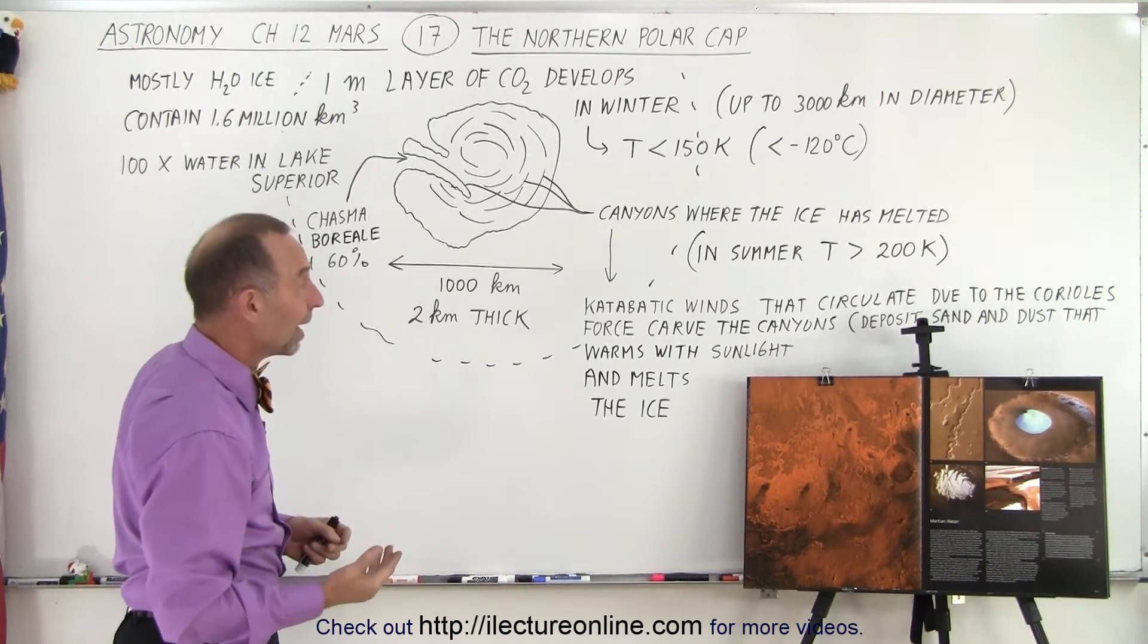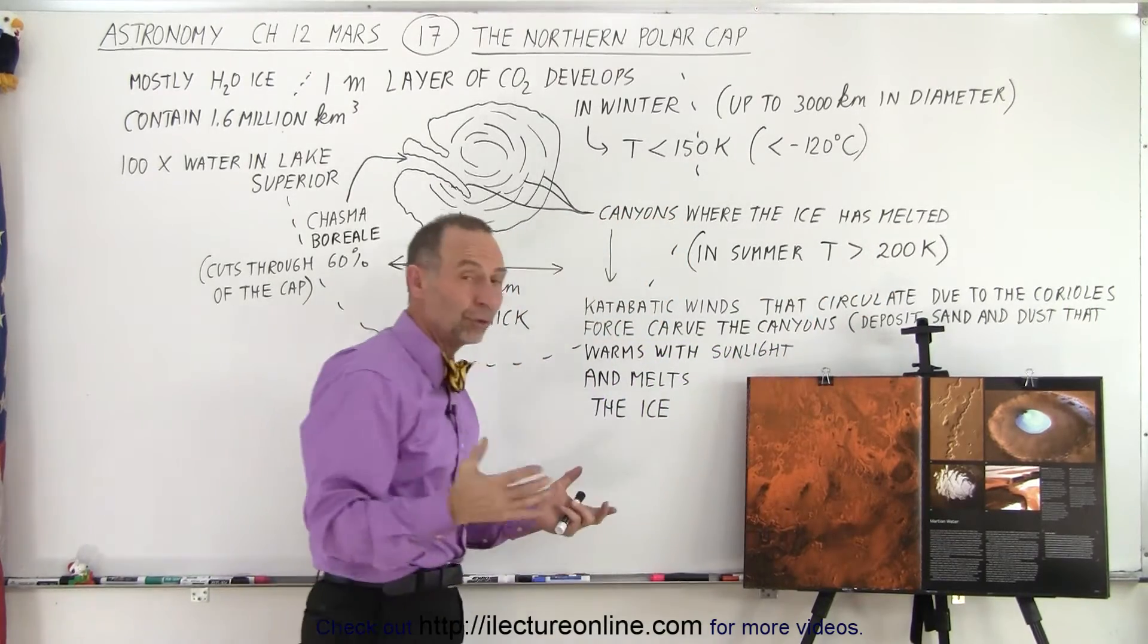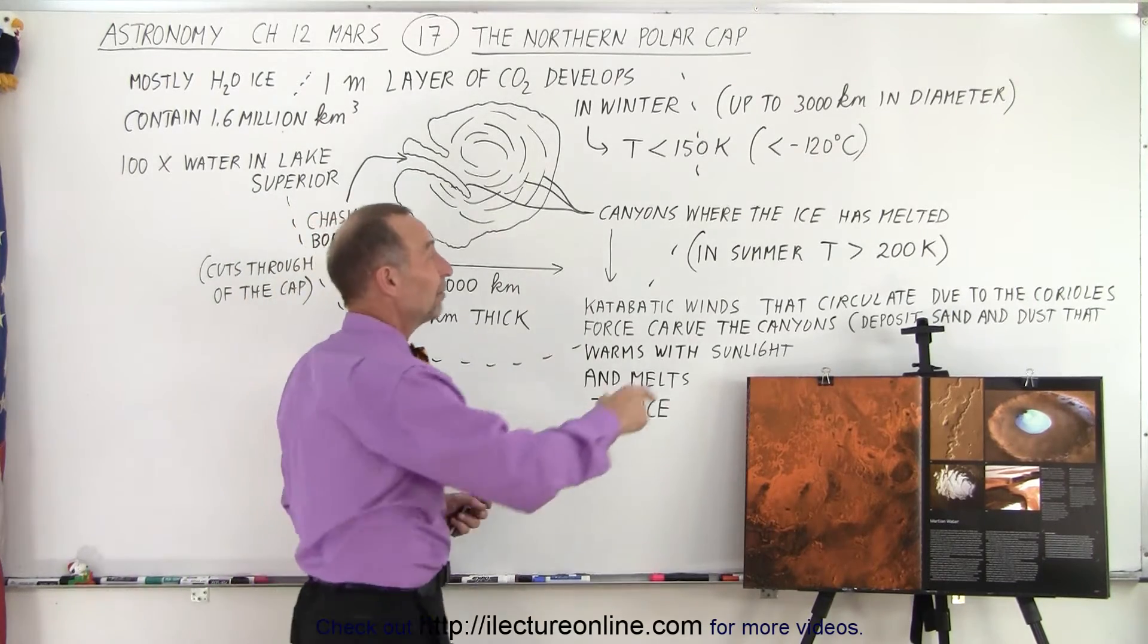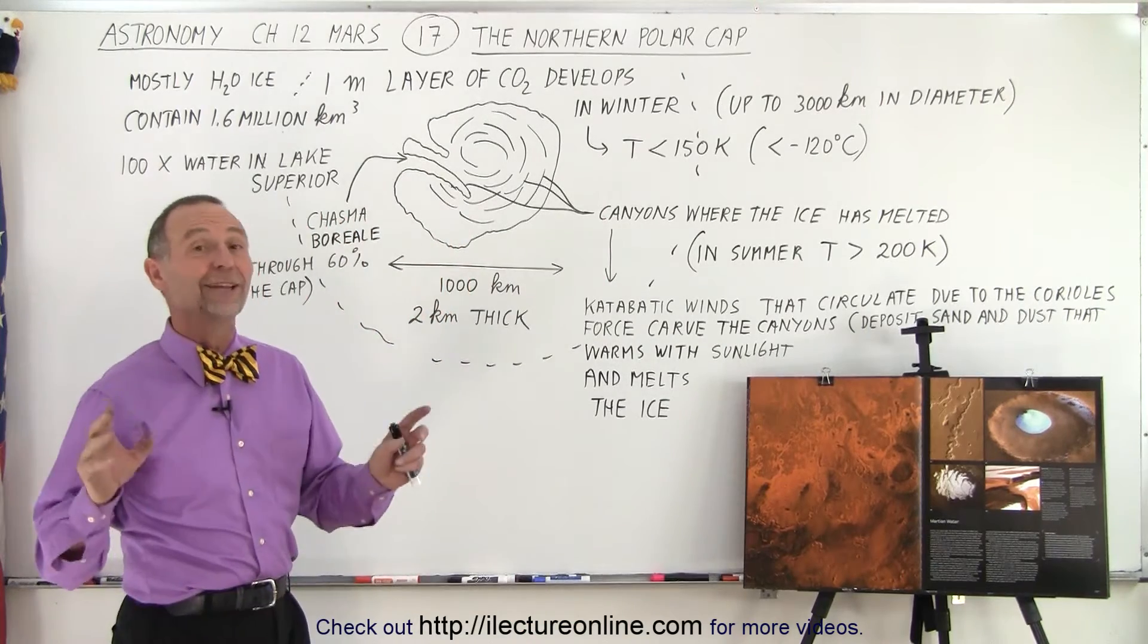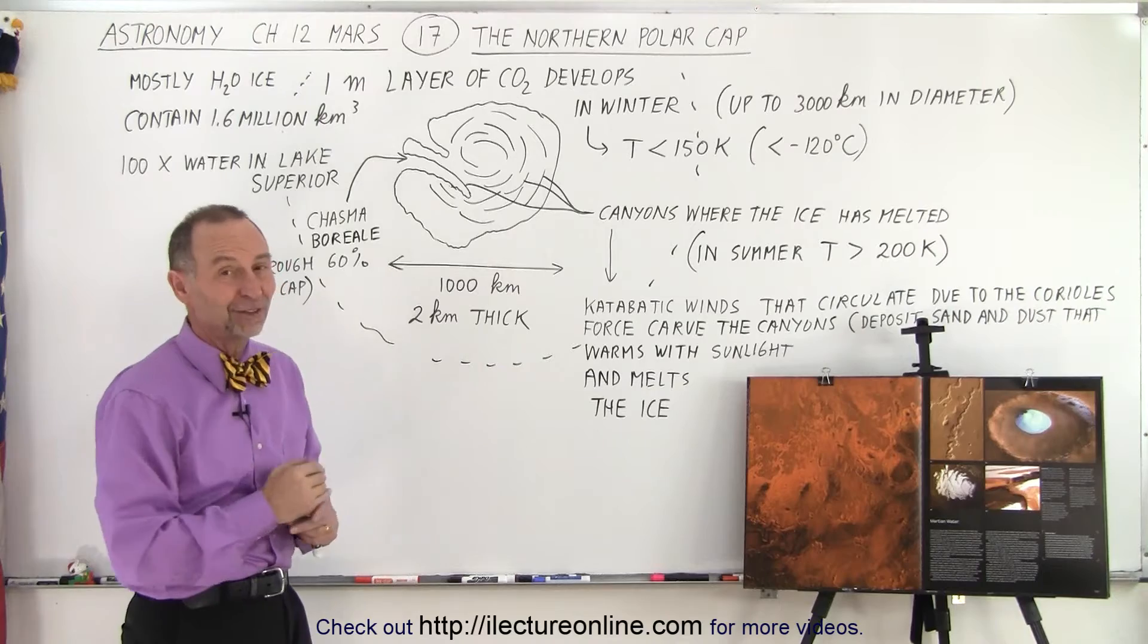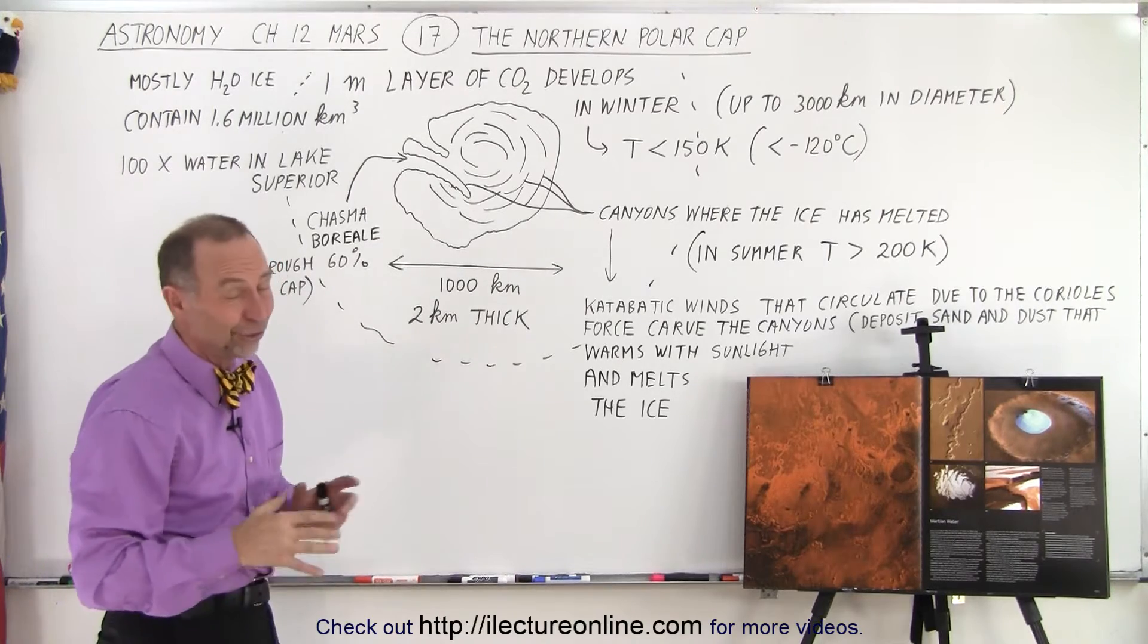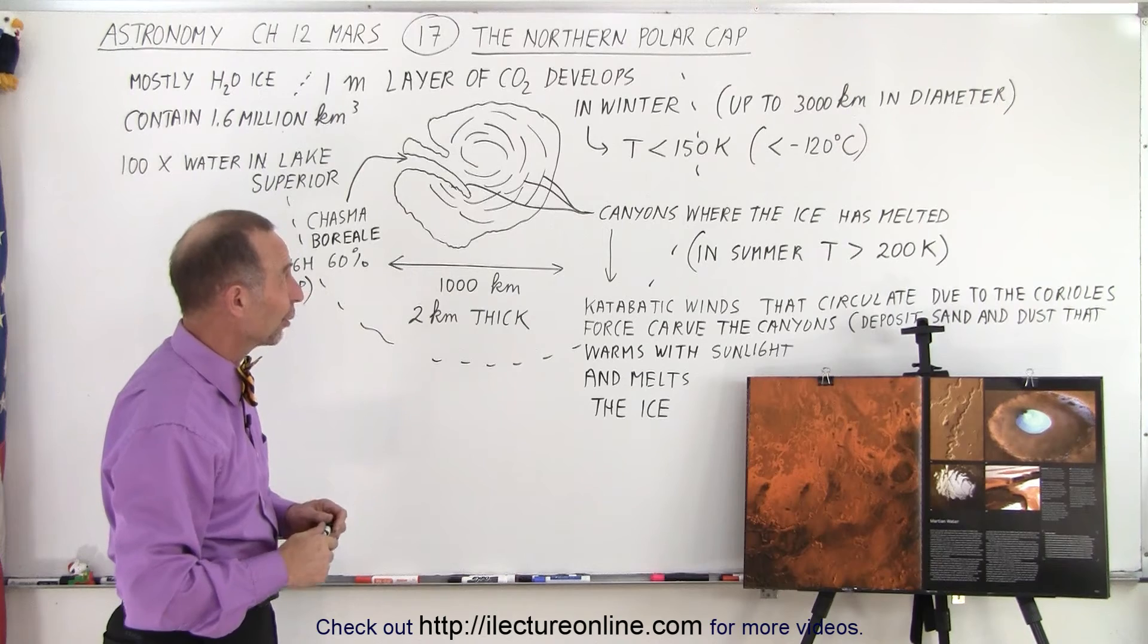In the summertime the temperature may reach as high as 200 Kelvin or above. Now 200 Kelvin is still pretty cold at 70 degrees below zero Celsius, equivalent to the coldest days at the Antarctic in wintertime. That is summer in the northern polar cap for Mars. Summer at the northern polar cap is no picnic. It still gets very cold.